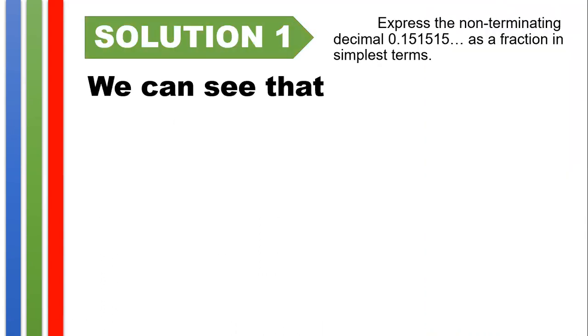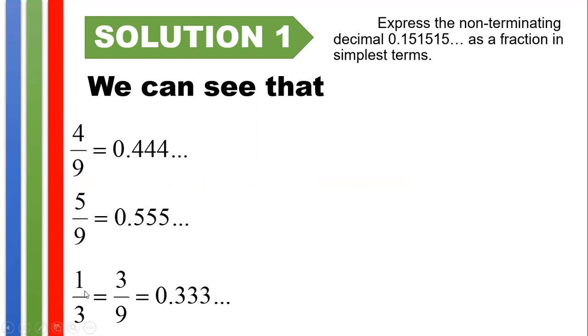So, I will present to you various solutions for this one. We can see that if you have 4/9, if you use a calculator, if you divide 4 by 9, you will get the repeating decimal 0.444... If you have 5/9, you will get 0.555... If you have 1/3, you could express 1/3 as 3/9. That is, if you multiply both numerator and denominator by 3, then you will have 3/9, which is equal now to 0.333...